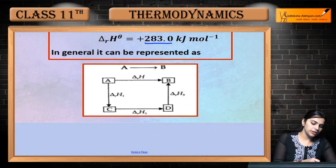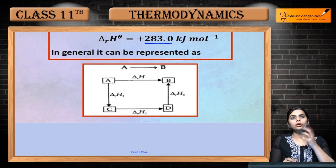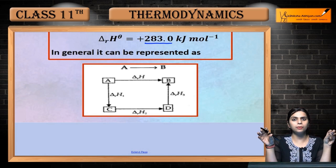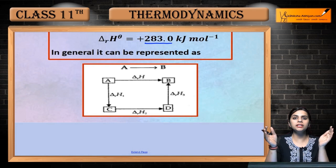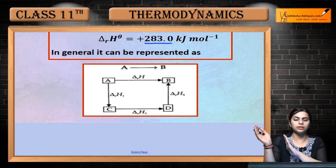If you look at the general representation, there is a reaction between A and B, where A is your reactant and B is your product. You can look at the enthalpy of your initial and final products.